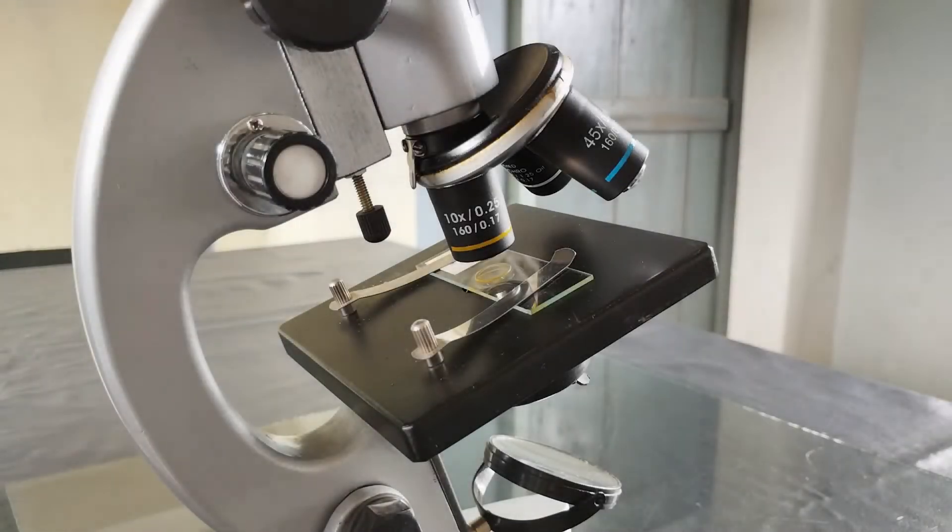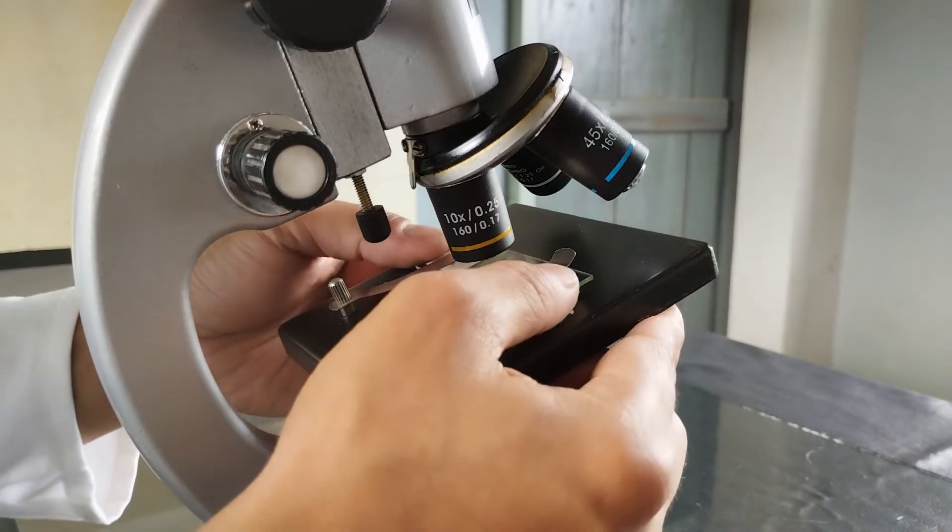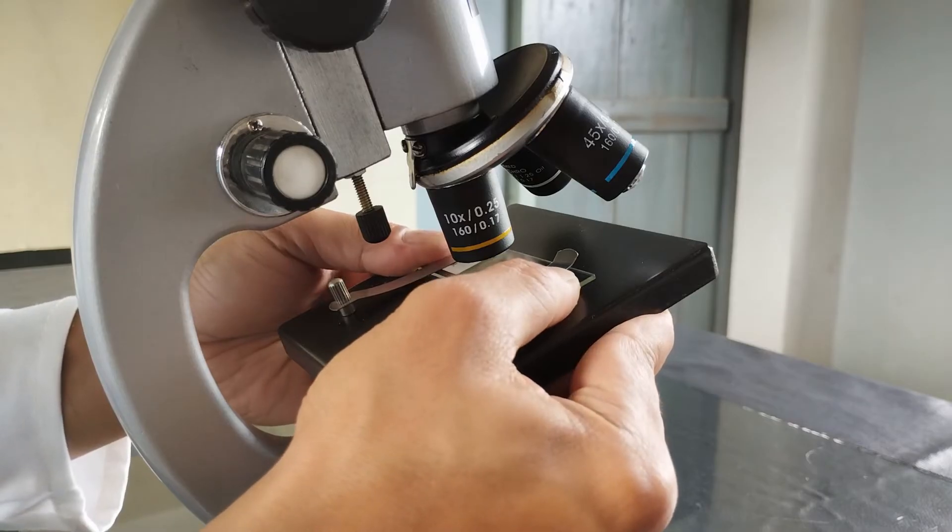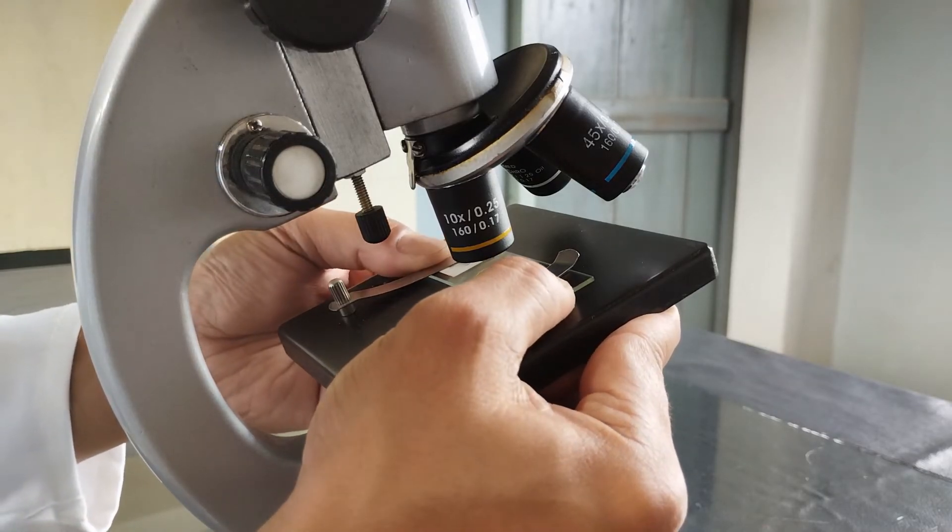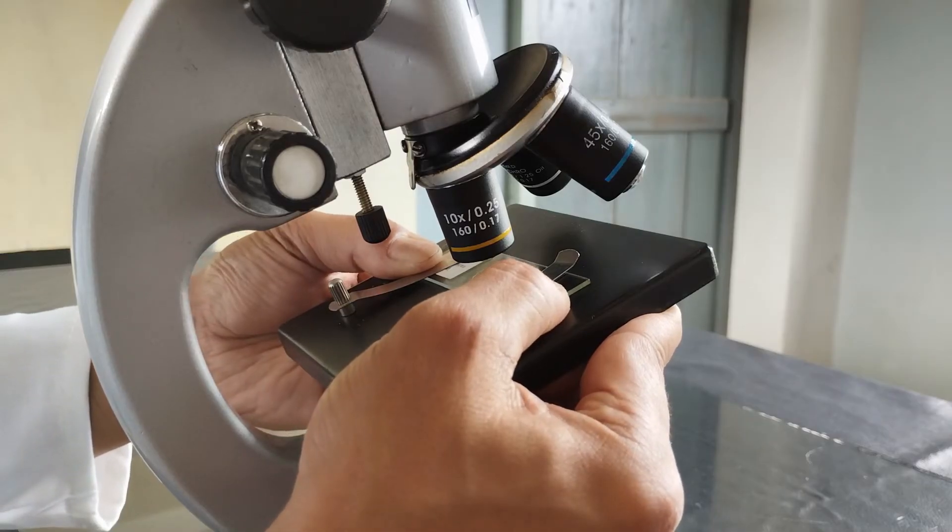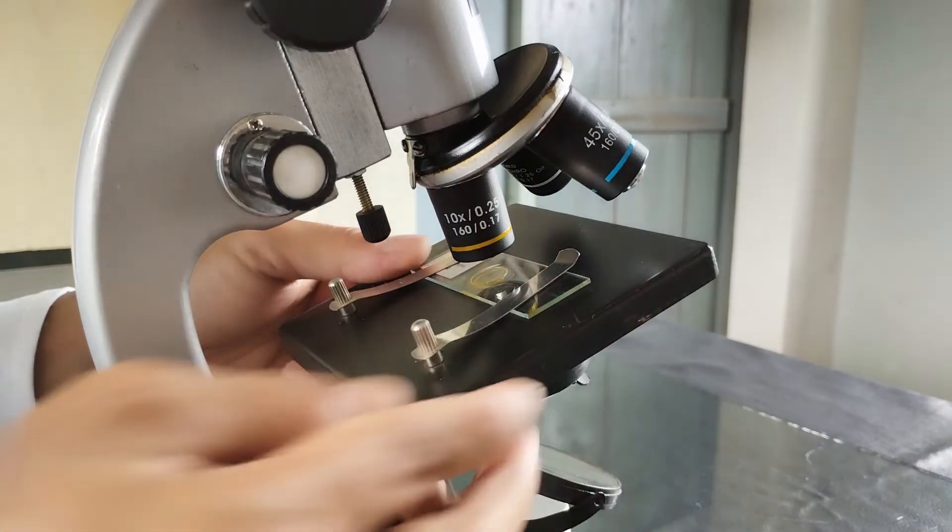Once you're done bringing the specimen image into focus under the low power objective, scan the specimen for the specific region of interest that you would like to observe and study further, by again adjusting the slide carefully and slowly sideways or up and down.